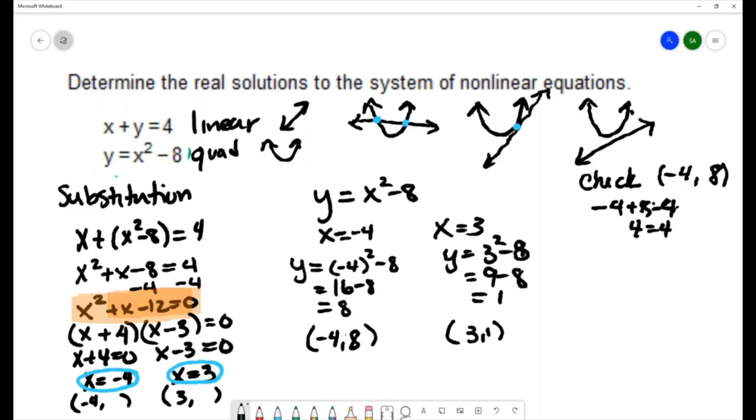In the second equation we have y equals x squared minus 8. That's 8 equals negative 4 squared minus 8. 16 minus 8 is 8, so that's another true statement. So that verifies that that ordered pair negative 4, 8 is a solution to the system because it makes all of the equations in the system true.